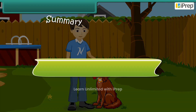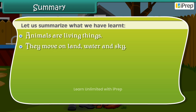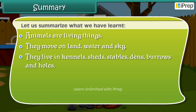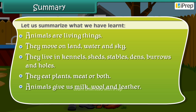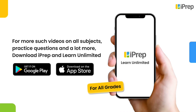Let us summarize what we have learned. Animals are living things. They move on land, water, and sky. They live in kennels, sheds, stables, dens, burrows, and holes. They eat plants, meat, or both. Animals give us milk, wool, and leather. We should treat animals with love. For more such videos on all subjects, practice questions, and a lot more, download iPrep and learn unlimited.